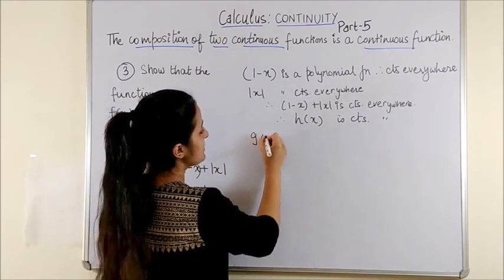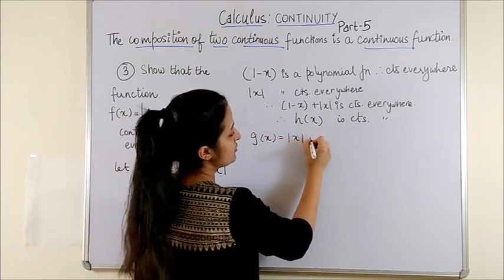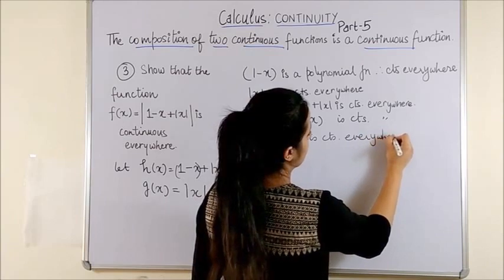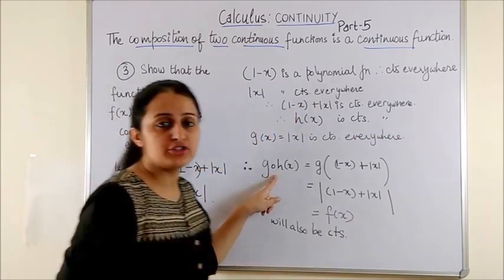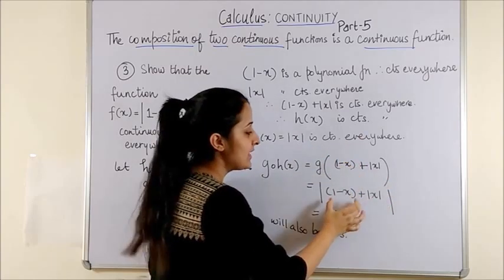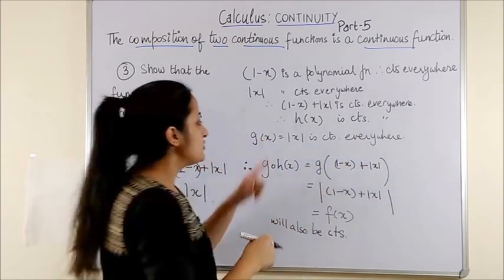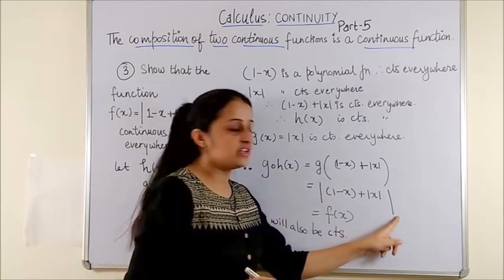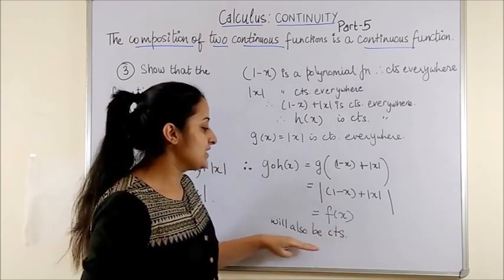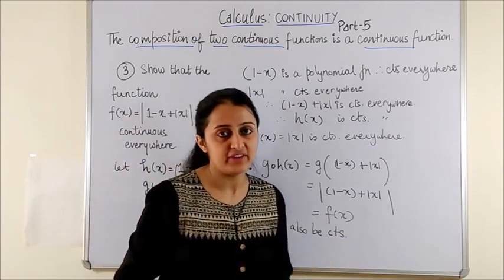Moving on, once again gx which is mod of x is continuous everywhere. Please note g of hx gives us g of, we substitute hx and then you know gx is mod of x. Therefore, this is the output which is your function fx and thus will be continuous everywhere.